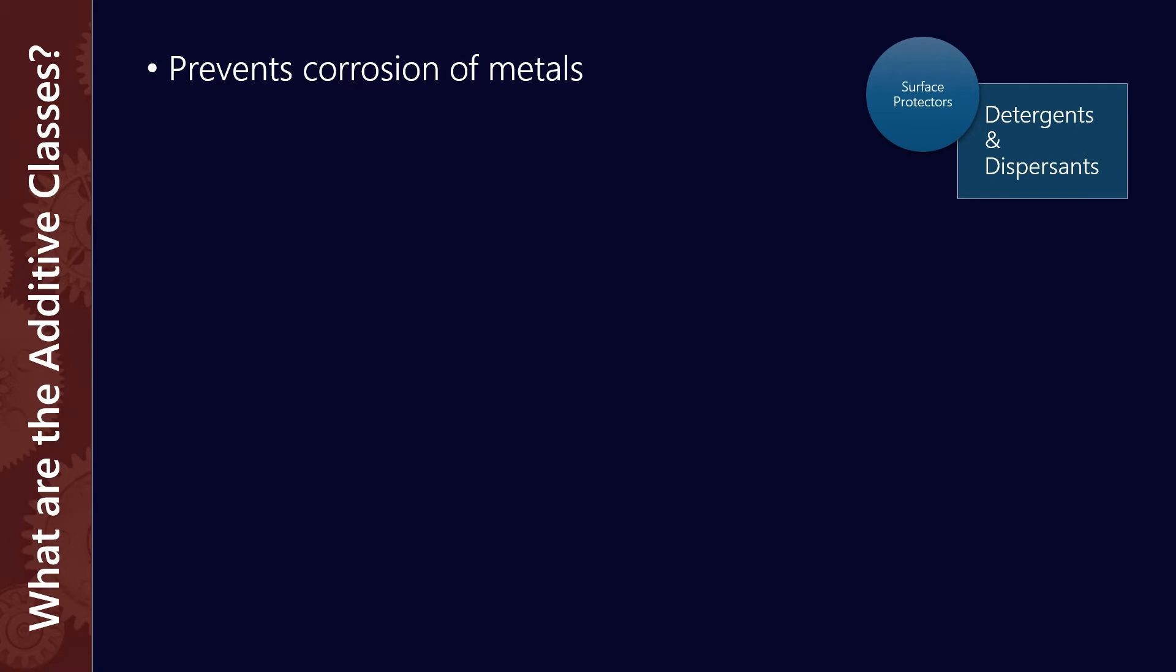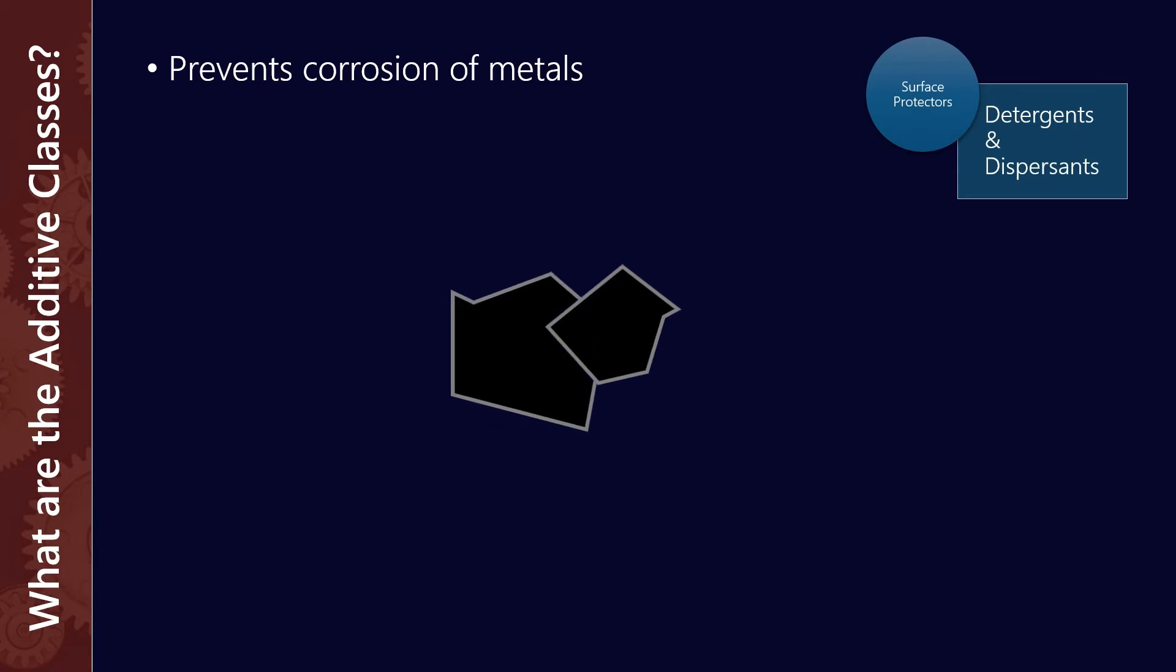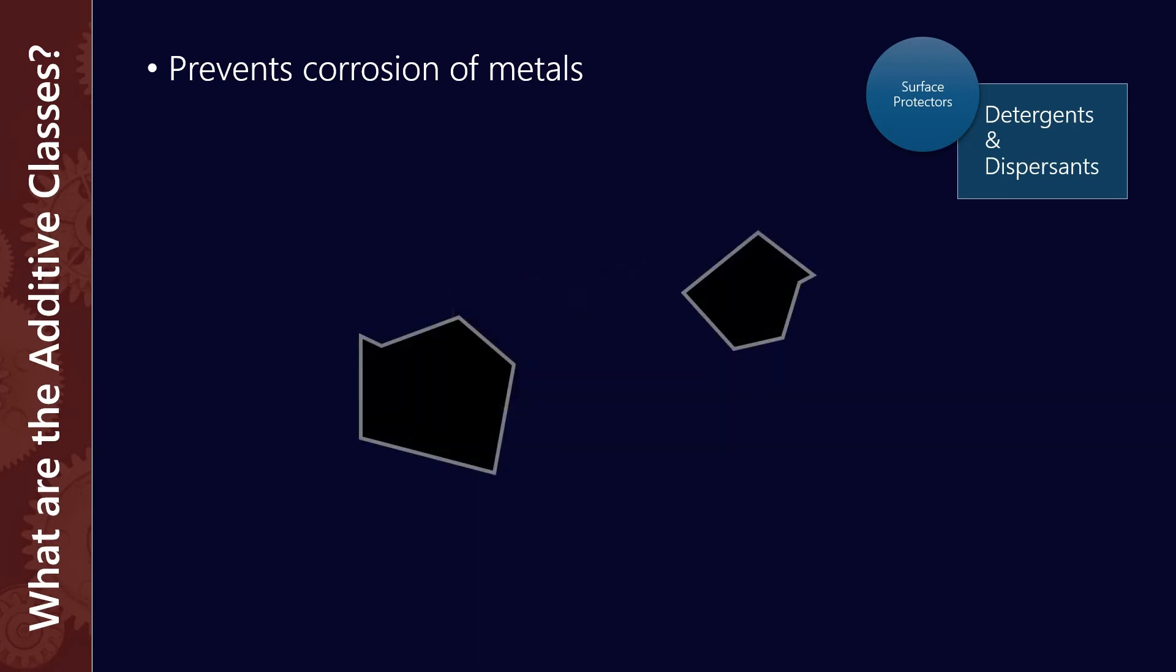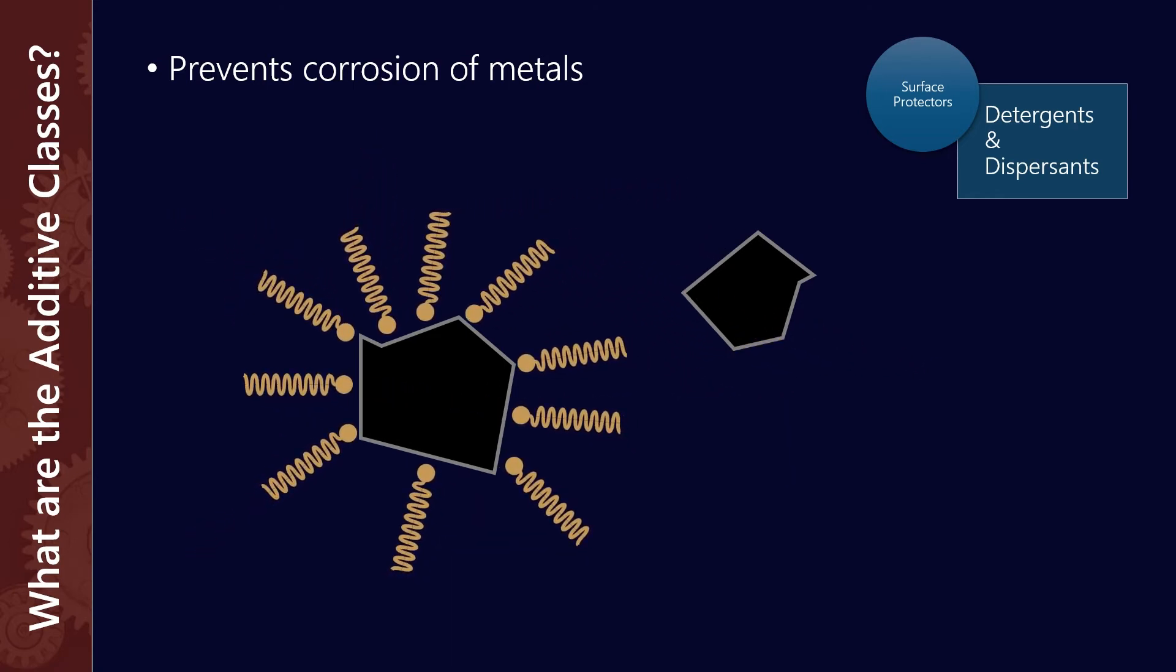We also have detergents and dispersants. These are two slightly different classes of additives that perform similar but also quite different functions. If you have soot particles, for example, soot in itself is not a problem, but soot does this thing called agglomeration where the soot particles start to stick together. If enough stick together, they can form an abrasive, sand-like particle. To keep them apart, we have surface-acting dispersants that bond to the surface and encapsulate it, preventing it from bonding with other particles so it can be carried to the filters and removed.